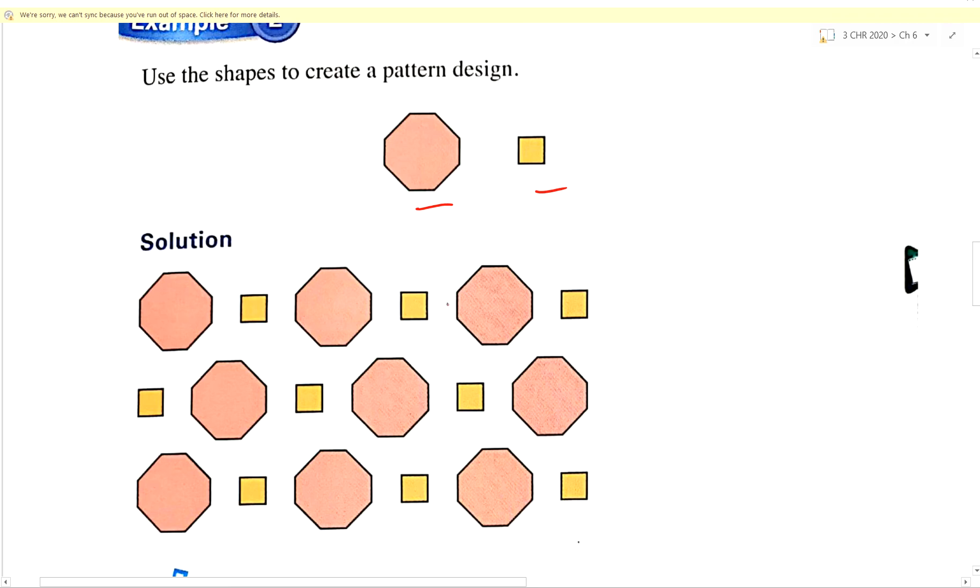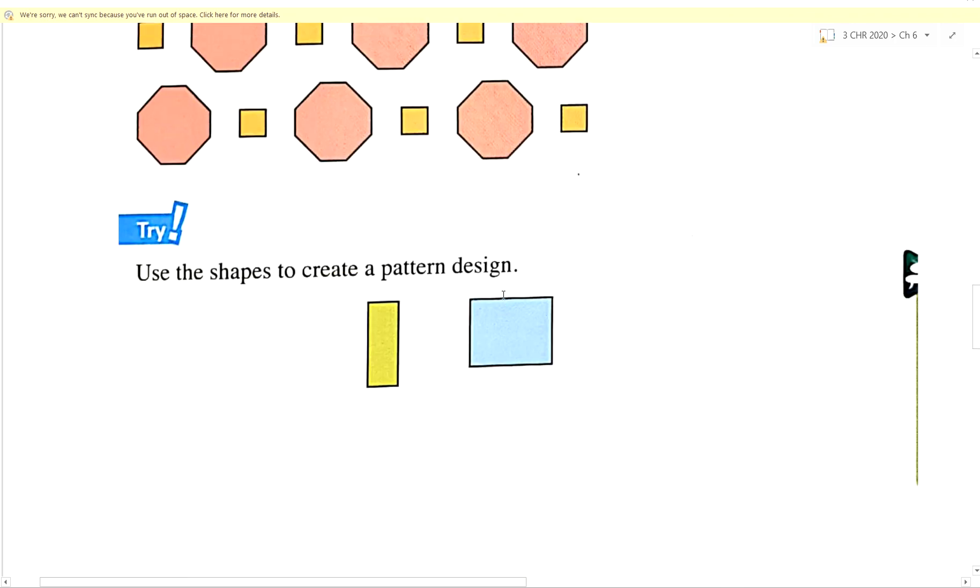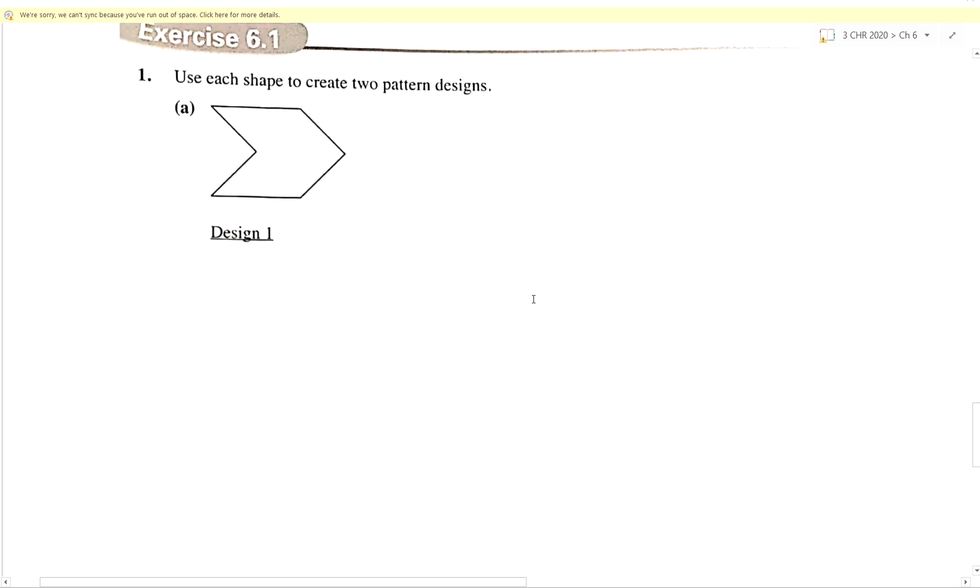In this case, they are just repeating the shapes over and over again, putting them side by side. As you can see, this is not difficult. So you can try this example yourself at the bottom of the page, or we can go straight to exercise 6.1.